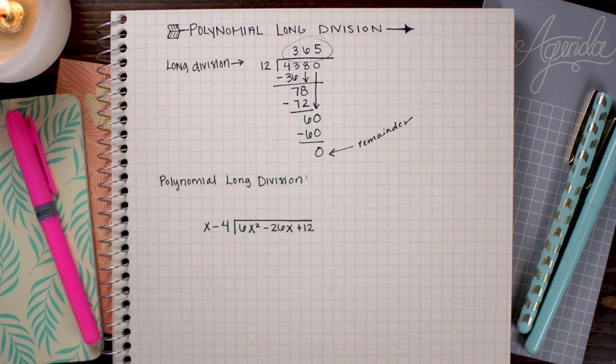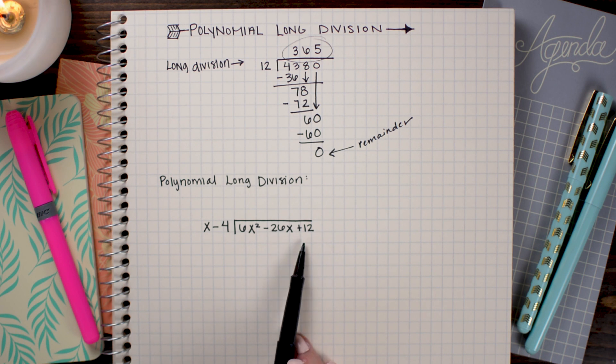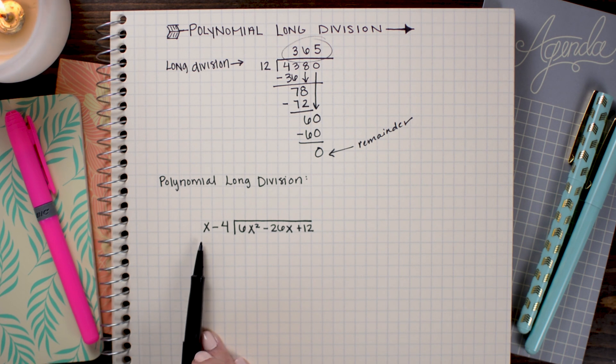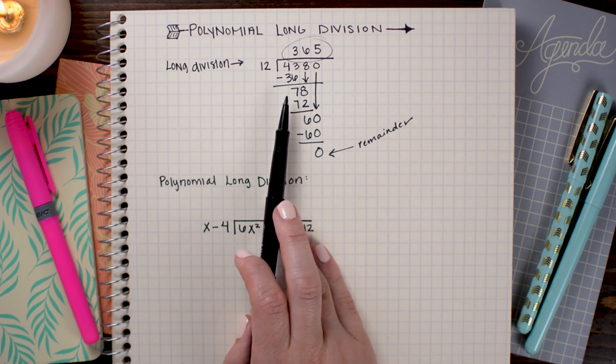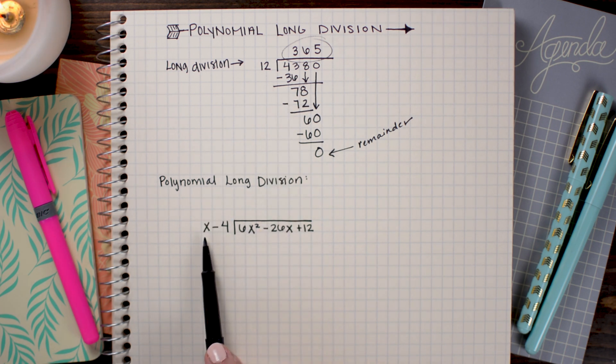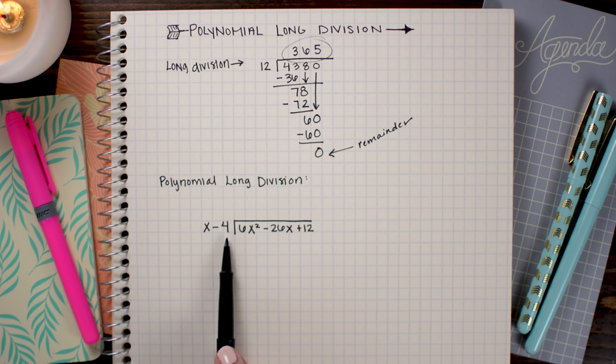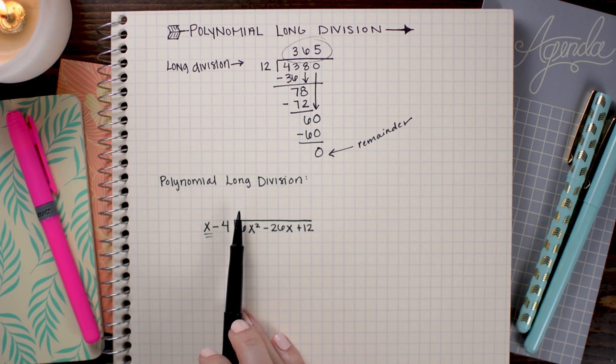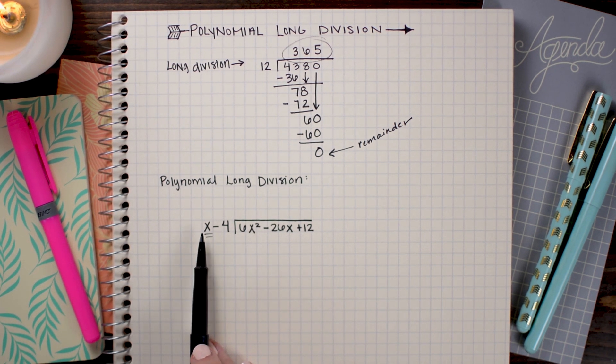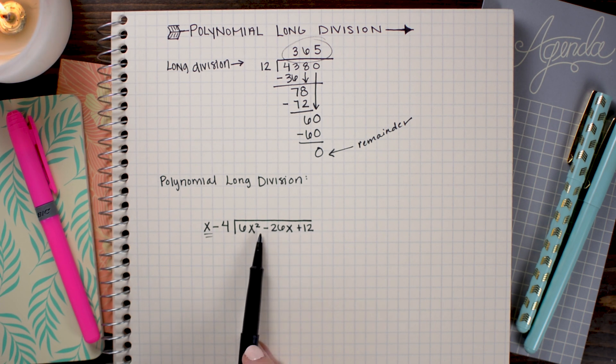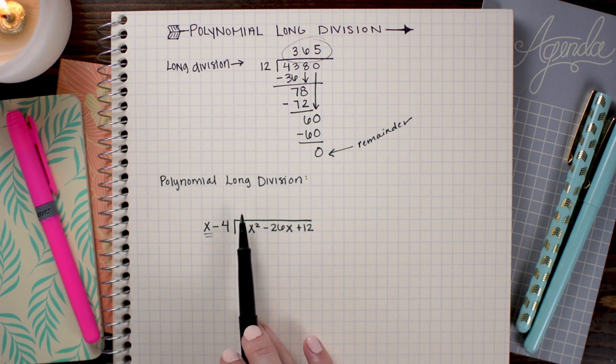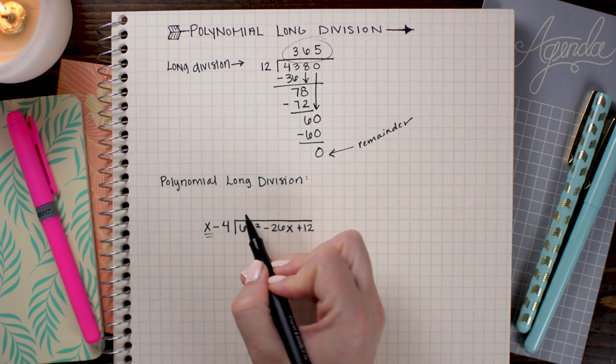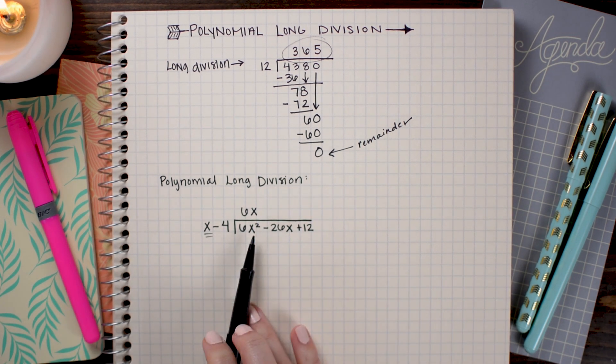So in this problem, I want to divide 6x² - 26x + 12 by the binomial x - 4. And this division is going to work a lot like our regular long division with a couple exceptions. So now that I have variables, I also have multiple terms here. So what I'm going to do is I'm just going to focus on this first term. And I'm going to ask myself, what could I multiply x with to get 6x²? Or in other words, 6x² divided by x is what? Of course, 6x² divided by x leaves me with 6x.